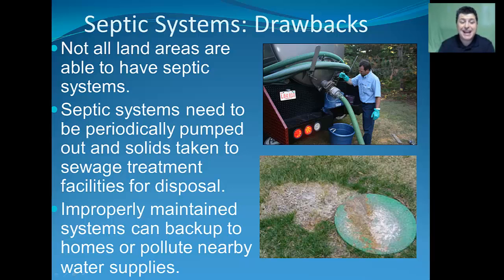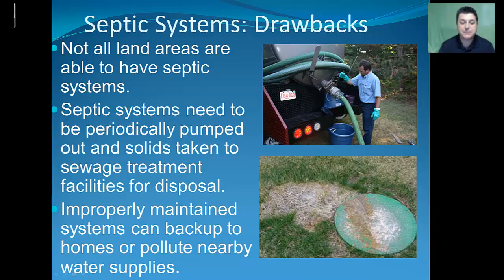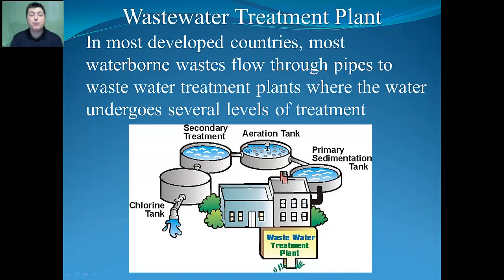If you don't maintain your septic system, it could back up, causing raw sewage to come into the home, or it could percolate up out of the ground and pollute nearby homes or water supplies. In most developed countries, waterborne waste flows through pipes to wastewater treatment plants, where the water undergoes several different levels of treatment before being released back into the environment.